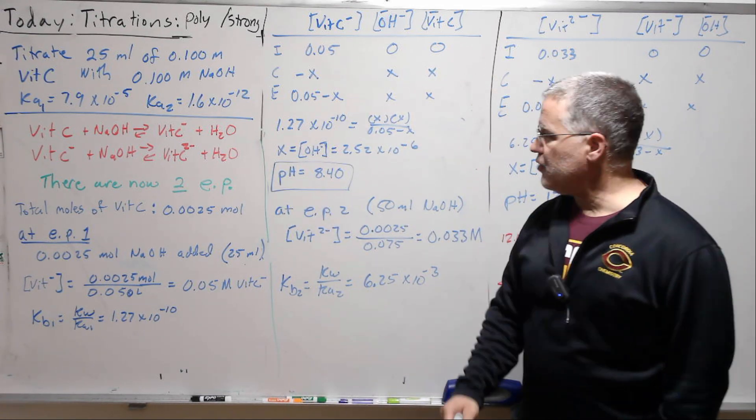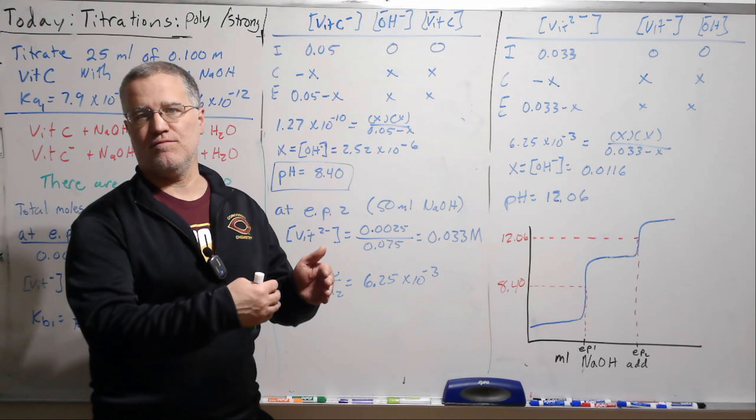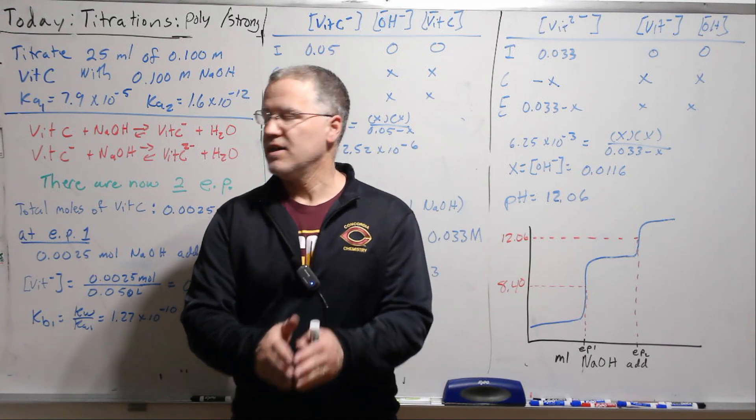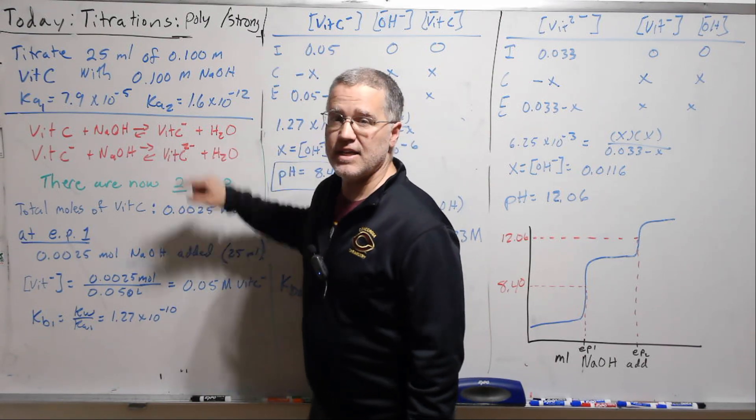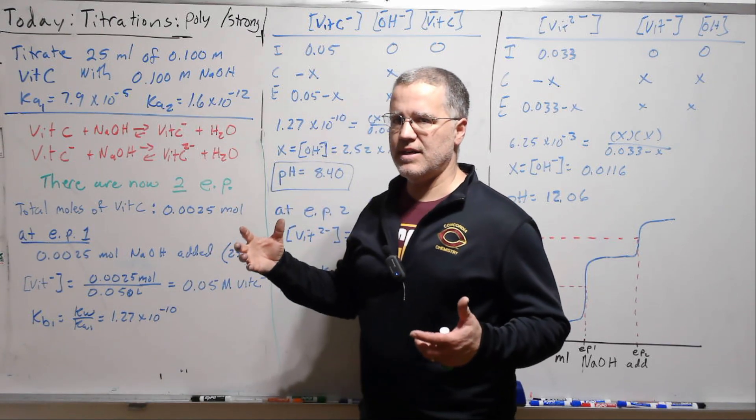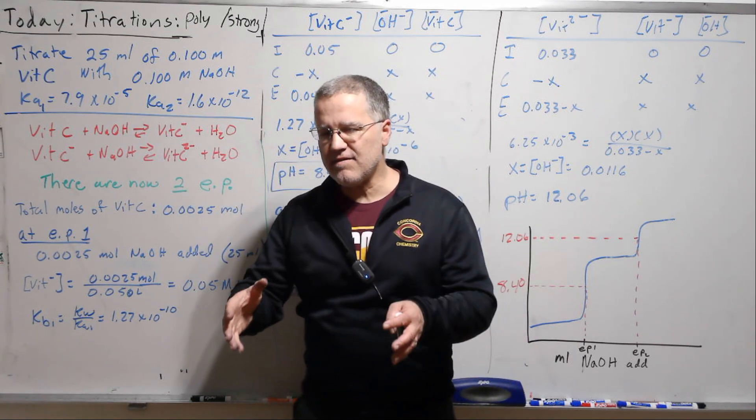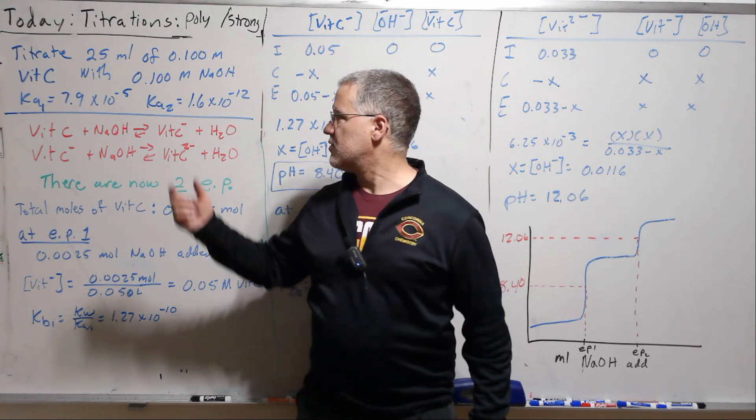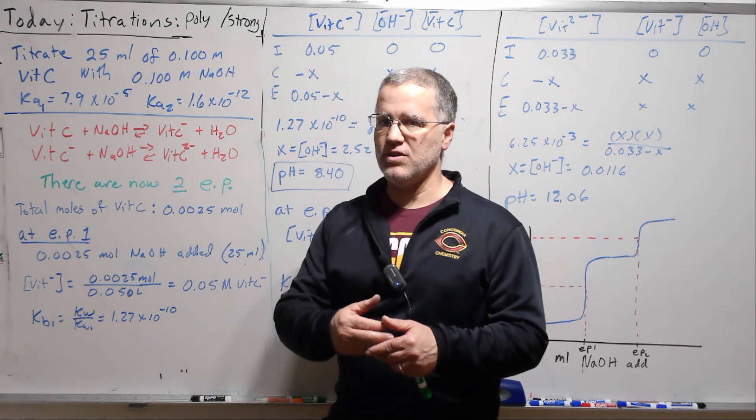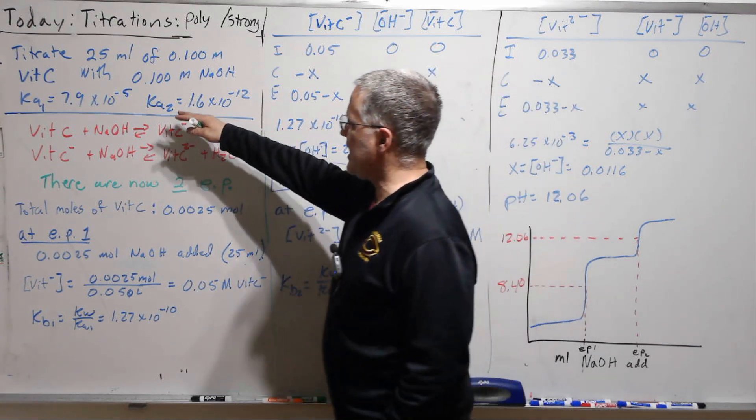Now there are going to be two equivalence points. There's going to be when we add exactly the same number of moles of sodium hydroxide to react with the vitamin C. That will take us to the first equivalence point, which will be this. And again, as before, we are getting away with an approximation here. Because these Ka's are so different, we can think of these as two separated reactions. Now if these were closer, then we'd have a complex equilibria situation and it would be much more difficult.